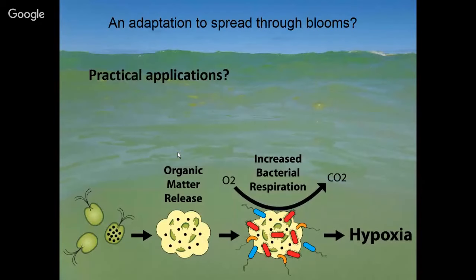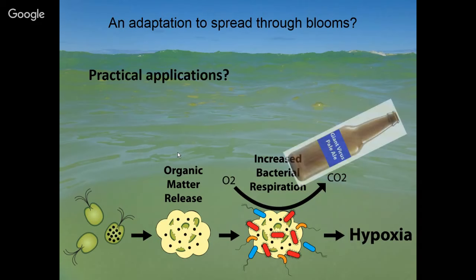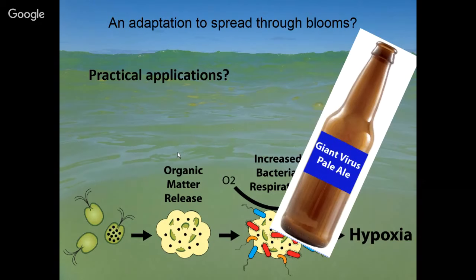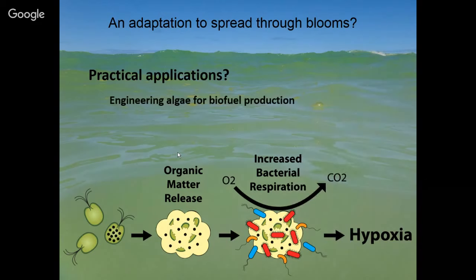Are there any practical applications? One of my colleagues tweeted after we published this paper about the virus with fermentation genes — he said, 'Yeah, but can they make beer from it?' So maybe we should try to clone those genes into a yeast and make some giant virus pale ale. But more seriously, we've been contacted by folks from the Department of Energy working on an algal biofuels project who requested our virus and host to try to genetically engineer Tetraselmis to be able to produce lipids for biofuels. So it may have some practical applications.